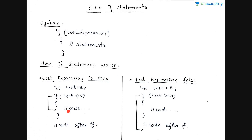Then the block of code inside the braces will be evaluated, and then the code after these braces will also be evaluated. So both blocks of code will be evaluated if the test expression is true. Here the variable test is equal to 5. If 5 is less than 10 — yes it is — then both blocks of code will be evaluated.